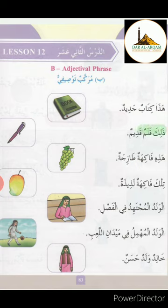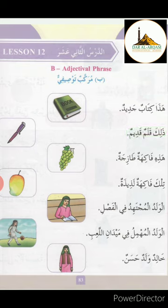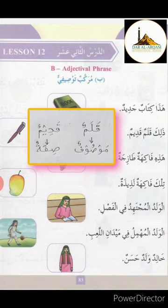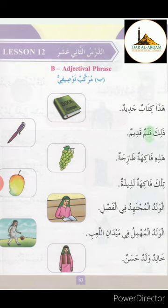ذَالِكَ قَلَمٌ قَدِيمٌ. ذَالِكَ means 'that', قَلَمٌ means 'pen', قَدِيمٌ means 'old'. قَلَمٌ قَدِيمٌ means 'old pen'. ذَالِكَ قَلَمٌ قَدِيمٌ — That is an old pen. In this sentence, قَلَمٌ is mausuf and قَدِيمٌ is shifat. Mausuf comes first and then comes shifat.